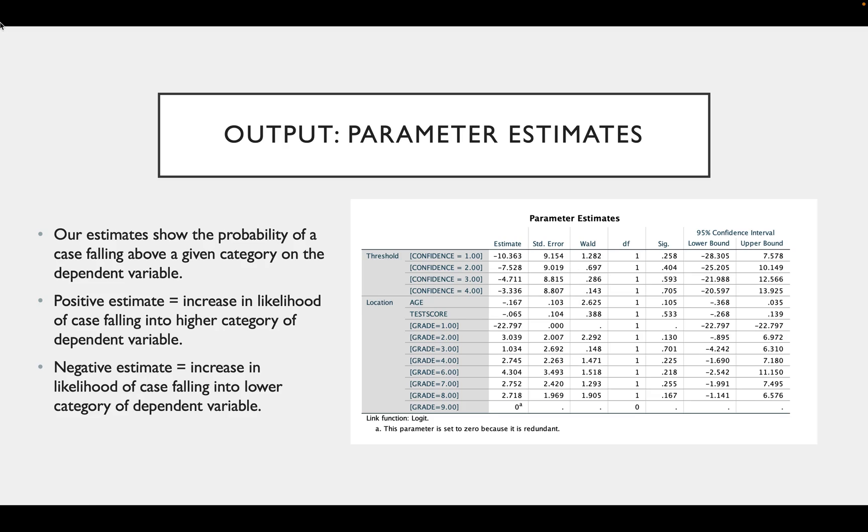And then finally, the last box is our parameter estimates. And these estimates show the probability of a case falling above a given category in the dependent variable. A positive estimate, so for example, like our grade four, indicates an increase in likelihood of a case falling into a higher category of the dependent variable. So what this means is that people with grade four scores were more confident.